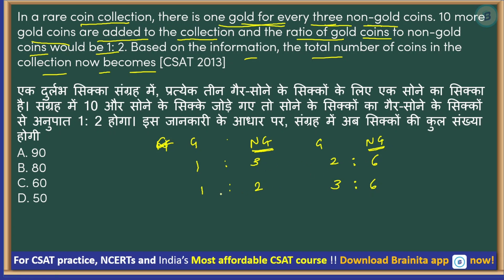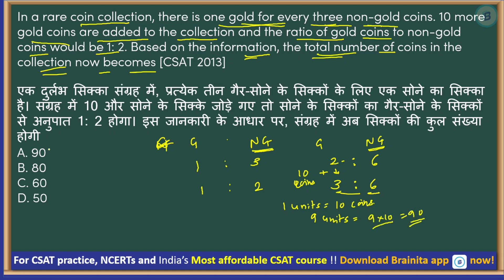So 1:3 is the same as 2:6, and 1:2 is the same as 3:6. Now non-gold coins are unchanged at 6 units, and gold coins changed from 2 to 3 — a change of 1 unit. This change equals 10 coins, so 1 unit = 10 coins. The question asks for total coins now, which is 3 + 6 = 9 units. So 9 units × 10 = 90 coins. Answer: option A.